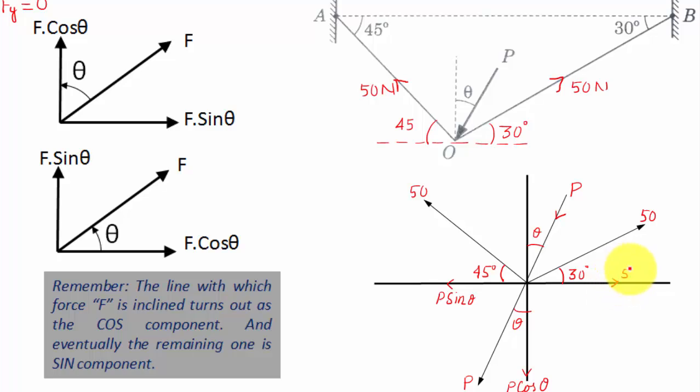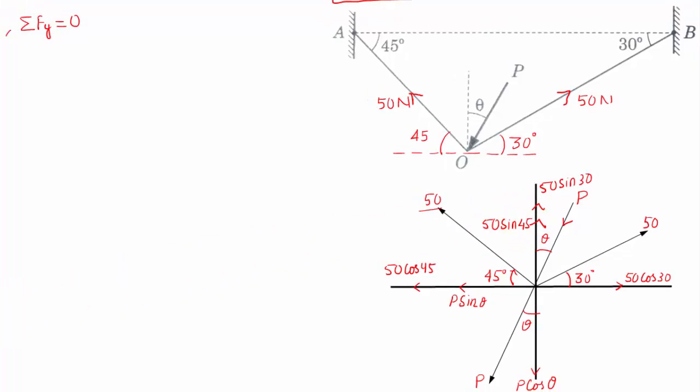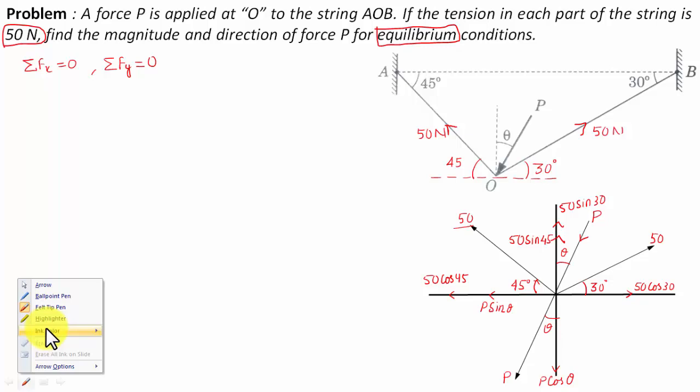Let us resolve these two forces also. This is going to be 50 cos 30 and this in the upper direction is going to be 50 sine 30. We have this force 50 at an angle of 45 degrees with the horizontal, and this is going to be 50 cos 45 and over here we're going to have 50 sine 45.